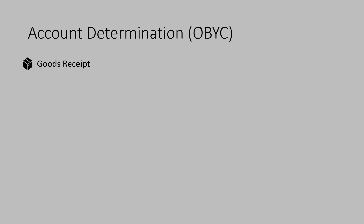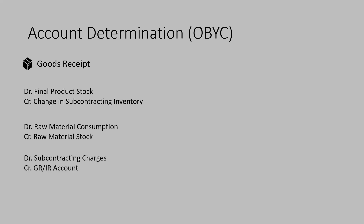Note that configurations for subcontracting are very much similar to that of normal FIMM integration, but in addition to that there are certain account determination settings to be done in OBYC transaction code, especially for subcontracting postings. For example, for the goods receipt we have the final product stock debit and the subcontracting inventory change account to be credited. For this we need the respective accounts entered in BSX and BSV in OBYC. For raw material consumption and raw material stock we need accounts in GBB under VBO account modifier and BSX account keys in OBYC.